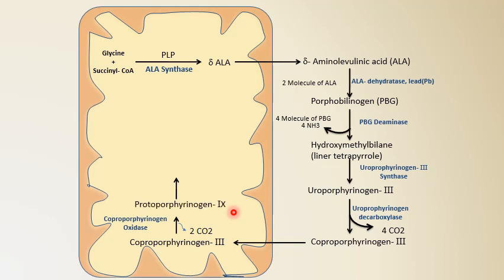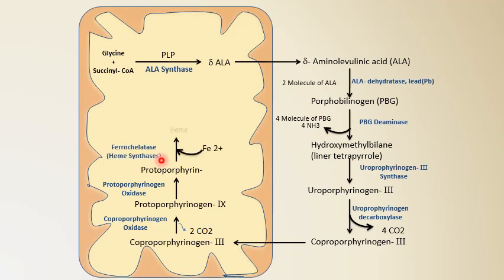Protoporphyrinogen IX is then oxidized by protoporphyrinogen oxidase, leading to the synthesis of protoporphyrin. This protoporphyrin combines with an iron molecule in the Fe²⁺ form with the help of ferrochelatase enzyme — also called heme synthase — and is converted to heme.